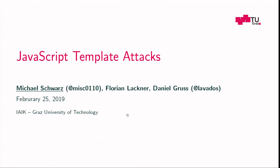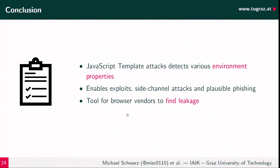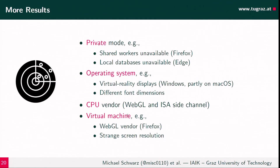Q&A: Some things like automatically discovering all properties seem completely automated, but the timing attacks for inferring the number of registers don't seem automated — you had to devise those tests manually. That's correct. The two side-channel attacks were manual and added into the JavaScript template attacks. Everything else is completely automated — detecting virtual machines, operating systems, CPU vendors, and private mode is all automated. You do need to set up the correct experiments, like starting the browser in normal mode versus private mode, and the tool gives you properties that differ.